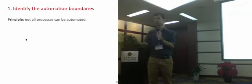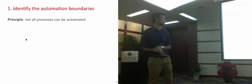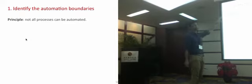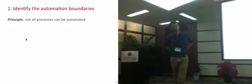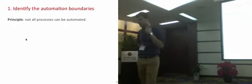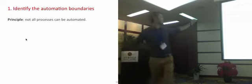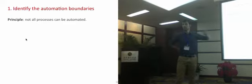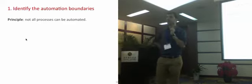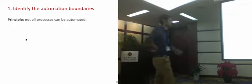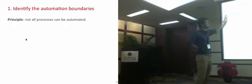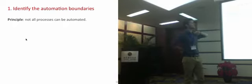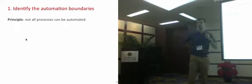Let's start with the first step: identify the automation boundaries. There is a principle behind each step. Here, the principle is that not all processes can be automated. Trying to automate all processes in our organization is never going to work. If we embark on a journey of trying to automate a process that is not prone to automation and discover this later in the project, that is going to be very expensive because we have to roll back having wasted a lot of time.